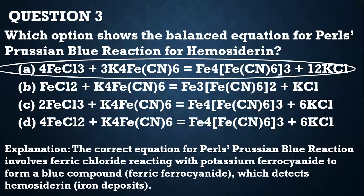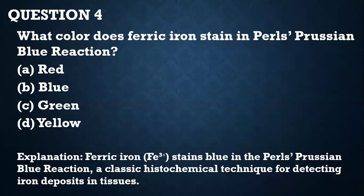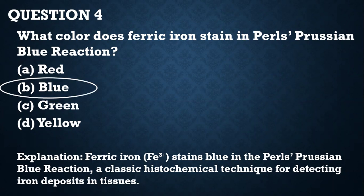Question 4. What color do ferric ions stain in Perl's Prussian Blue reaction? The question already gives out the answer — the answer is blue. That particular test is for detecting iron deposits in tissues.